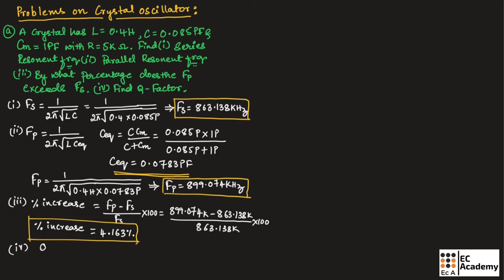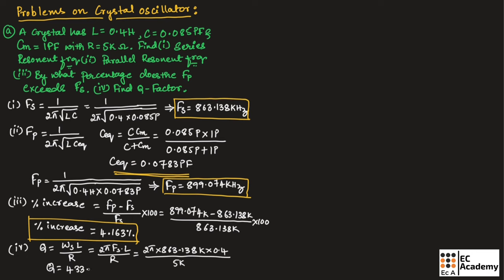Now let us find the Q factor. Q = ωs · L / R, where ωs = 2πFs. Substituting 2π × 863.138 kHz × 0.4 Henry divided by 5 kilo ohm, the Q factor equals 433.86.